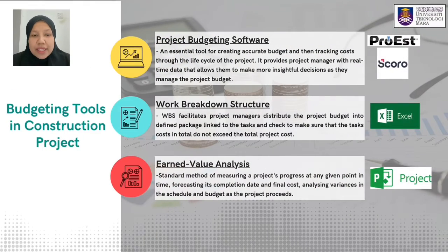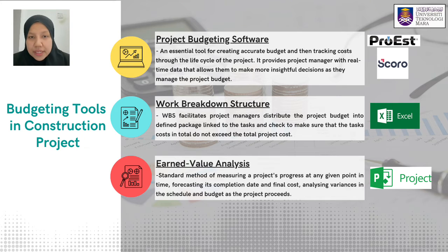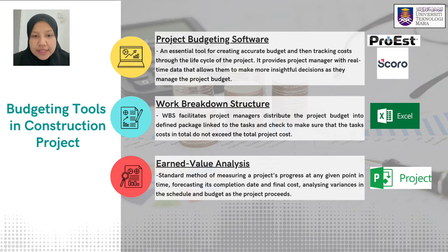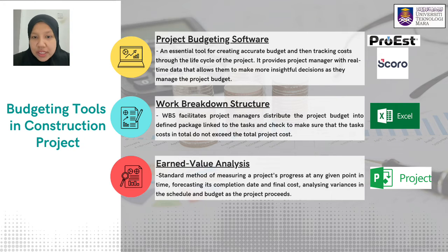We now go to budgeting tools in construction projects. There are many tools that project managers can use in planning, monitoring and controlling the budget. The first is project budgeting software, an essential tool for creating an accurate budget and tracking costs through the life cycle of the project. It provides project managers with real-time data that allows them to make more insightful decisions. Examples include software such as Pro, its, and Squirrel.